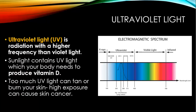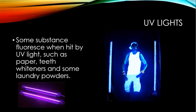Ultraviolet light is another form of radiation on the electromagnetic spectrum. It's radiation with a higher frequency than violet light. Sunlight contains UV light, which your body needs to produce vitamin D. Too much UV light can tan or burn your skin, and high exposure can cause skin cancer. Some substances fluoresce, meaning they emit light when hit by UV light — such as paper, teeth whiteners and some laundry powders. When you have a black light and shine it on white clothes, they become fluorescent.